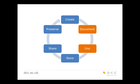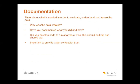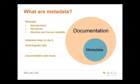Moving on to documentation and usage — documentation seems trivial but think about what is needed to evaluate, understand, and reuse the data. Why was it created? How have you documented what you did and how? Did you develop code to run the analyses? If so, that should be kept and shared too. It's important to provide a wider context for trust, and this goes back to the idea of reproducibility and trying to stem research fraud. Metadata is a word you will frequently encounter in research data management. It is essentially a subset of documentation — machine and human readable, standardized and structured — and it helps to cite and disambiguate data.